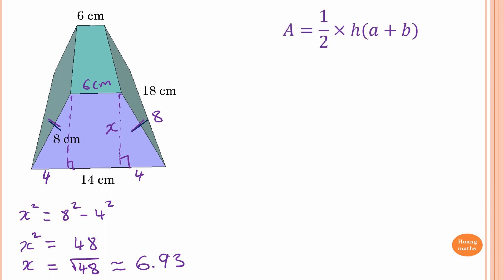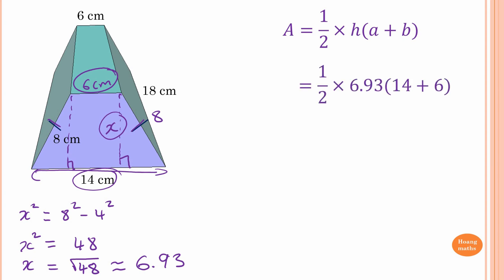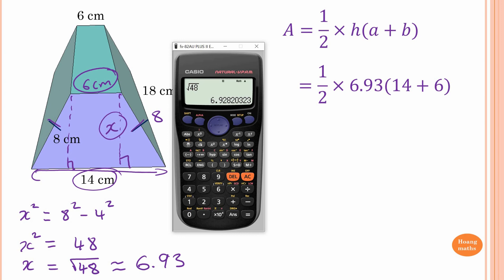The area of a trapezium is a half of height times (A plus B). So A is 6, B is 14 (all the way from here to here), and the perpendicular height x is 6.93. Substituting in: if you type 6.93 instead of the exact value, your answer will be slightly different. Using the exact calculator answer: one half times answer times (14 plus 6), giving 69.282.